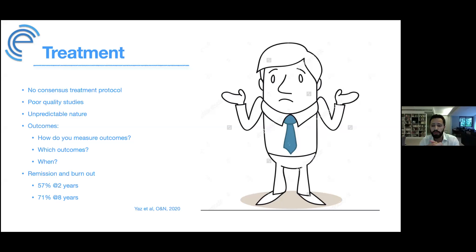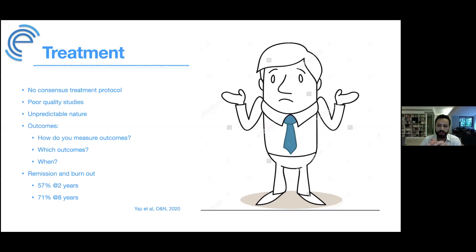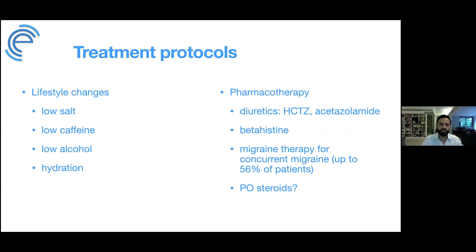The disease will eventually go into remission or burn out. A recent 2020 review found that 57% of patients are asymptomatic at two years, and 71% by eight years — which illustrates how difficult it is to attribute outcomes to treatment versus natural history.